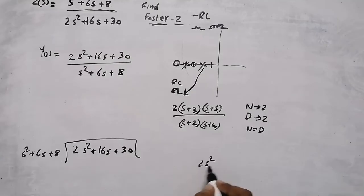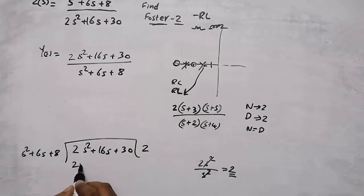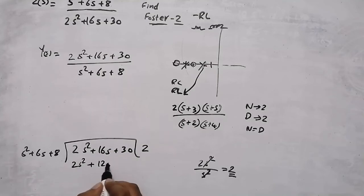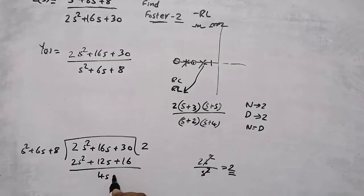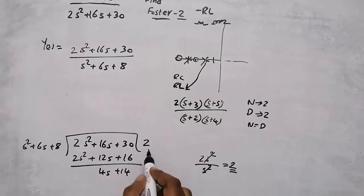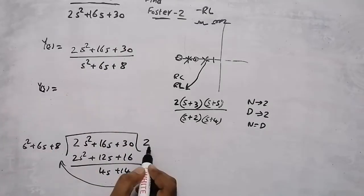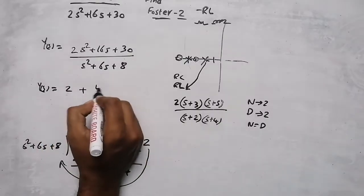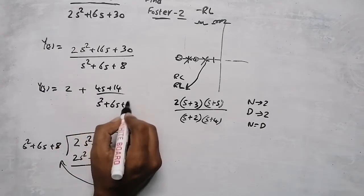For long division, divide the first term 2s² by s², giving 2. Then 2 × (s² + 6s + 8) = 2s² + 12s + 16. Subtracting: 2s² − 2s² = 0, 16s − 12s = 4s, and 30 − 16 = 14. So Y(s) = 2 + (4s + 14) / (s² + 6s + 8).